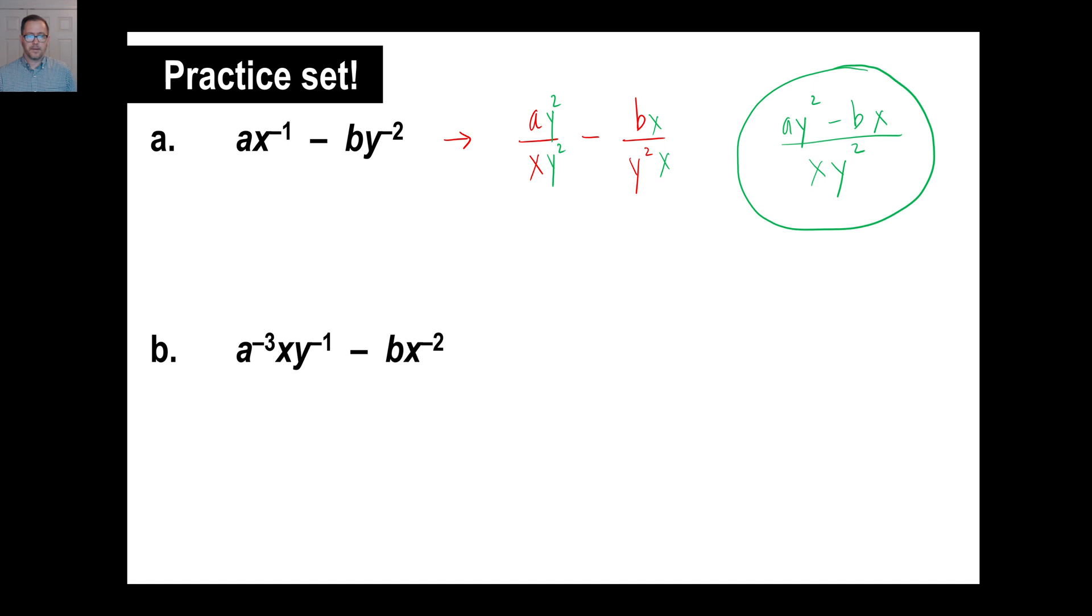Alright. Pause it and try B and then come back and see what you have. Okie doke. Let's take a look at B. Let's rewrite this first. You know what? I'll go down here and rewrite it. Alright. New fraction. X looks good the way it is. A⁻³ comes down. Y⁻¹ comes down. Alright. I'll subtract.